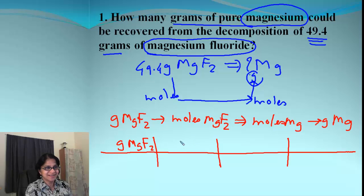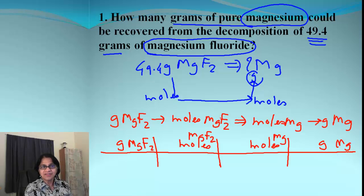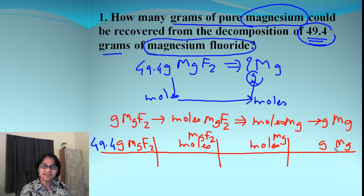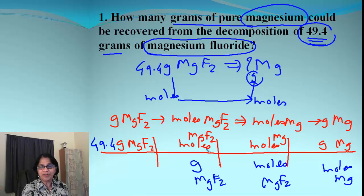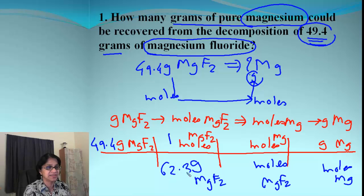Once we get the roadmap, we get the grid. We write down in the numerator: moles of MgF₂, moles of Mg, and grams of Mg. The given — 49.4 grams — goes at the start, and the ending point is grams of magnesium. Diagonally across we cancel: grams of MgF₂ goes in the denominator, then moles of MgF₂. For the moles-to-grams ratio, moles is 1 and grams is the molar mass of MgF₂, which is 62.3 grams.